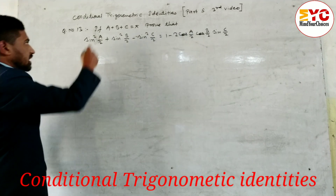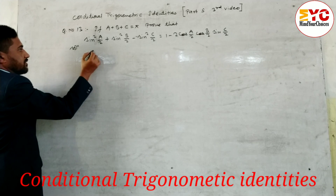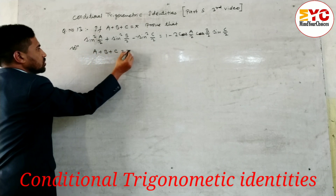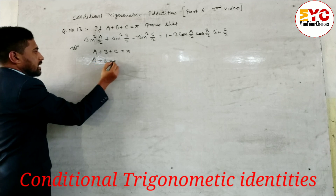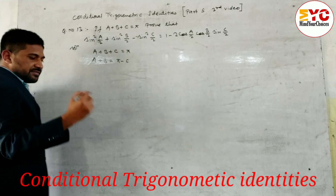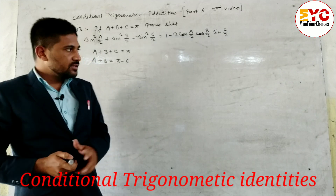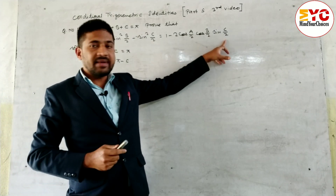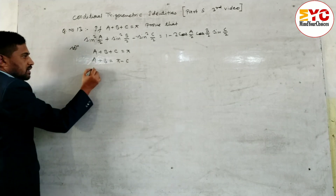We have to prove this. One condition is given here. First, we take the condition a plus b plus c is equal to pi, so a plus b is equal to pi minus c. Looking at the RHS, we see a by 2, b by 2, c by 2, which means we have to divide by 2.